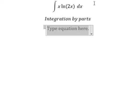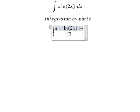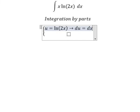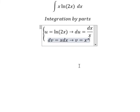I will put u equals to ln of 2x. Taking the derivative for both sides, we have du equals to dx over x. And dv equals to x dx. Integrating this, we have v equals to x squared over 2.